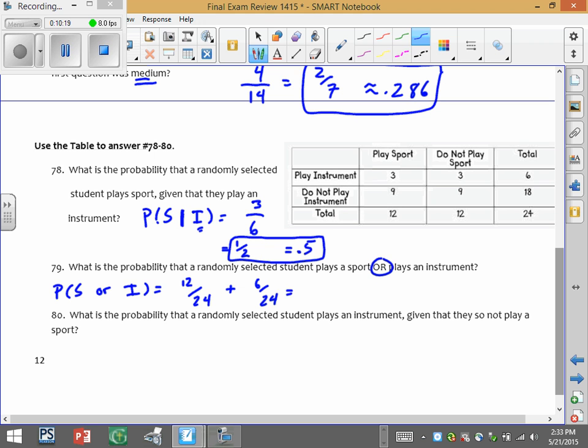There are 6 out of the 24 that play instruments. But we always have to consider, is there an overlap? So here's play sports, here's play an instrument. And sure enough, if you circle those, which you are more than welcome to do if you see a question like this on the final, there's an overlap of 3 students.